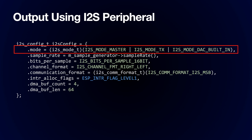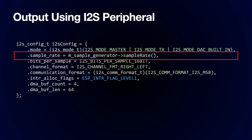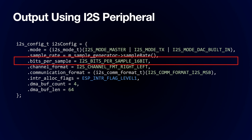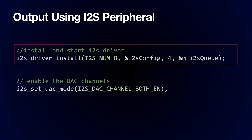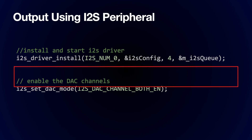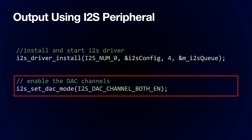We need to configure the I2S peripheral to use the built-in digital-to-analog converters. We need to tell it the sample rate we want to use and the bits per sample — this is slightly strange as only the top 8 bits will be used by the DACs. Initialising the I2S peripheral is the same as usual: we install the driver. One important note: we can only use I2S 0 with the built-in DACs. We also need to set the I2S peripheral into DAC mode and enable both DAC channels.